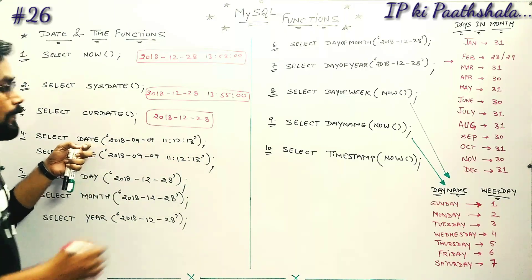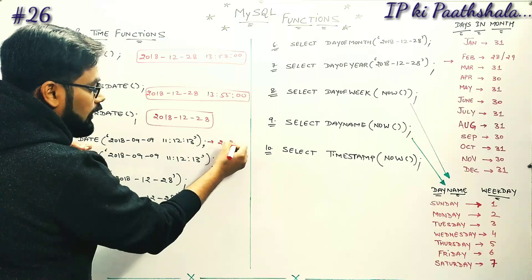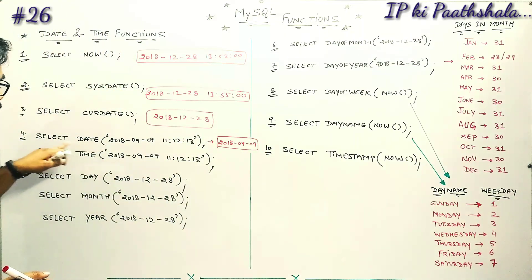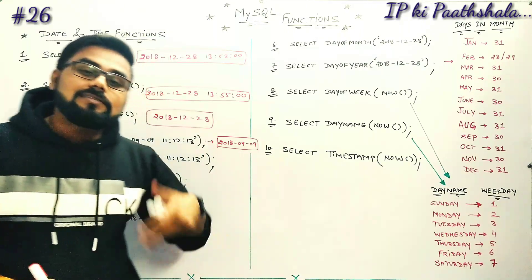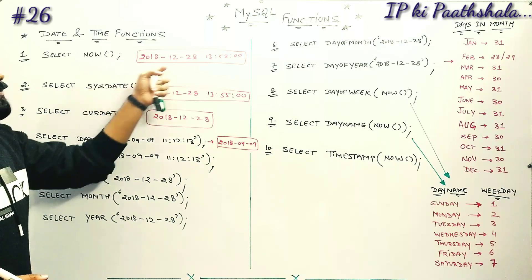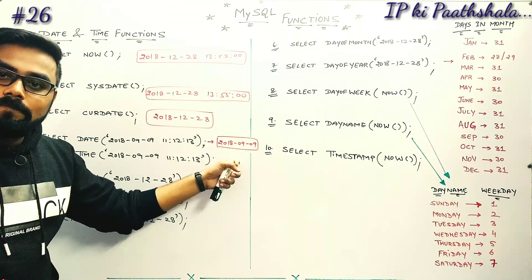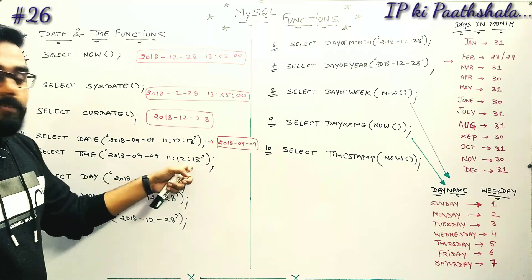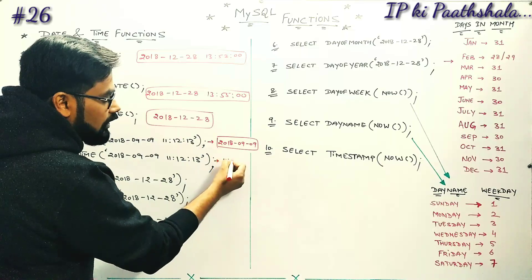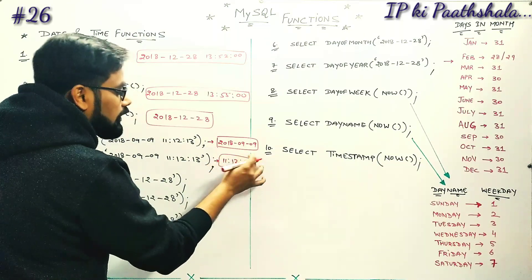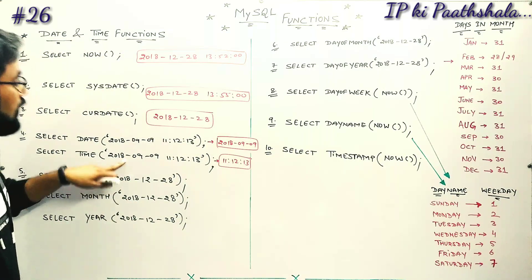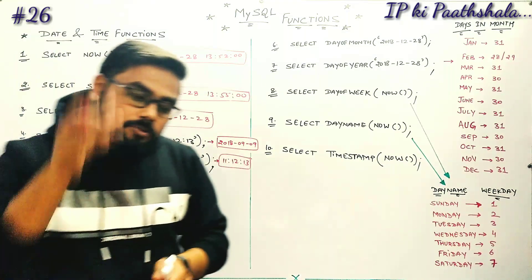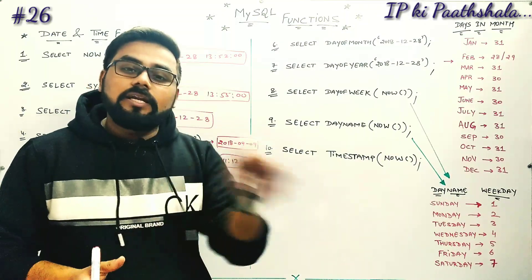From that input, what we pick for date is just the date part: 2018-09-09. If we use NOW() or SYSDATE() as the input, the DATE() function will give us the answer for the current date portion only, returning just the date from the current instant's date and time.